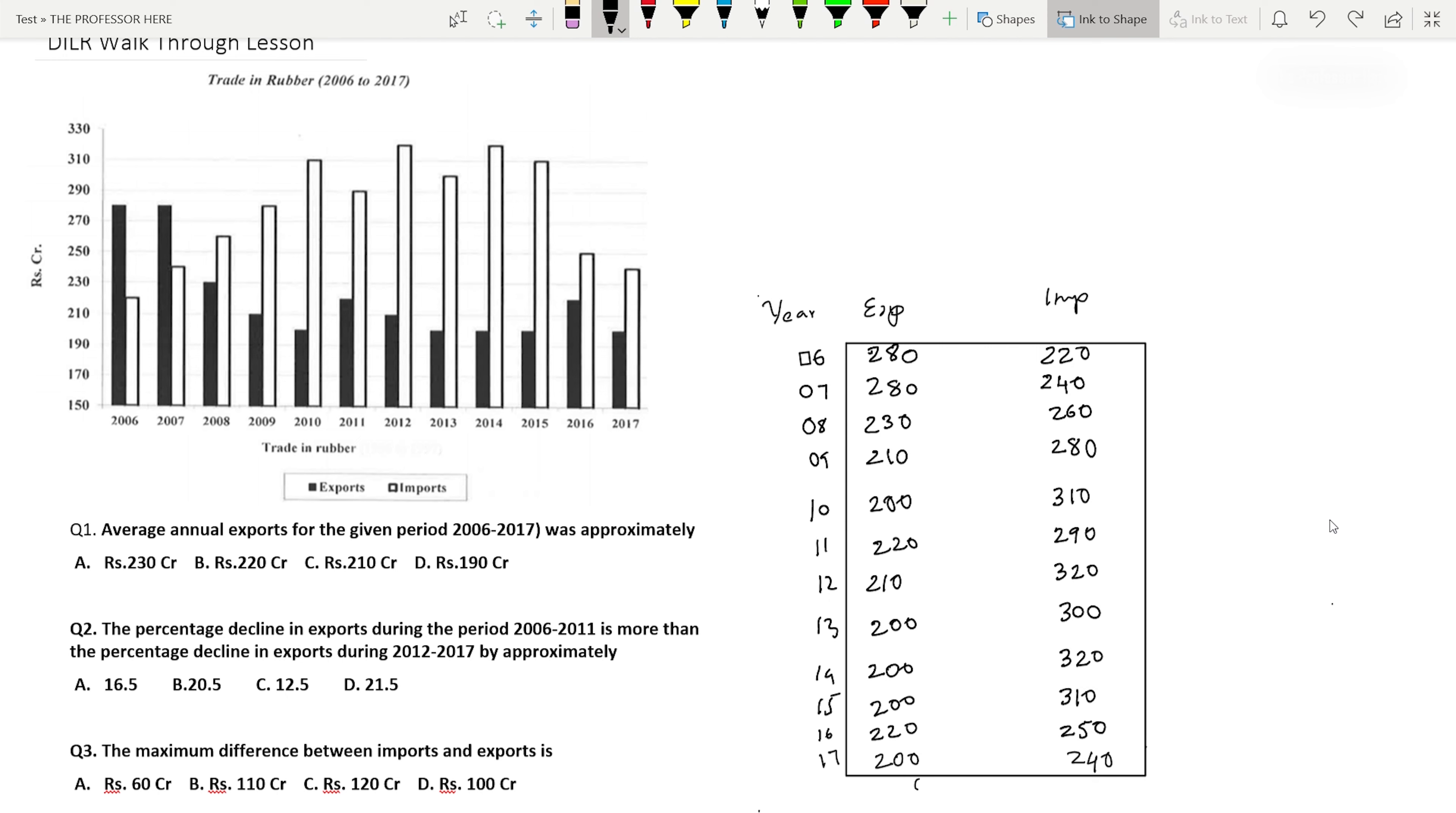Let's add the exports: 2, 3, 5, 6, 9, 17, 25. Total exports is 2658 divided by 12, which equals 220.8. The question asks for approximately, so option B, 220 crore, is the closest answer. Option B is the answer.